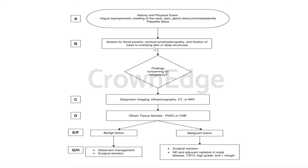If you suspect malignancy — discrete mass fixed to underlying tissues with induration and possible lymphadenopathy — rule out bacterial infection, then assess for facial paralysis (since the facial nerve traverses through the parotid gland between its deep and superficial lobes), cervical lymphadenopathy, and fixation to overlying skin or deep structures. Then proceed with diagnostic imaging — ultrasonography, CT, or MRI — followed by biopsy or FNAC. Treat benign lesions with observation or surgical excision; malignant lesions with surgical excision, radiotherapy, and chemotherapy as appropriate.